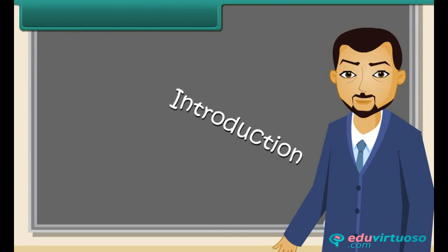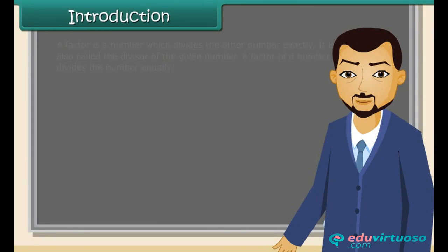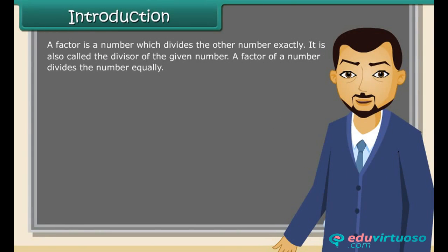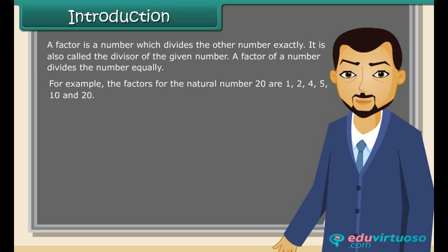Introduction: A factor is a number which divides the other number exactly. It is also called the divisor of the given number. A factor of a number divides the number equally. For example, the factors of the natural number 20 are 1, 2, 4, 5, 10, and 20. The factors of prime numbers are one and the number itself.